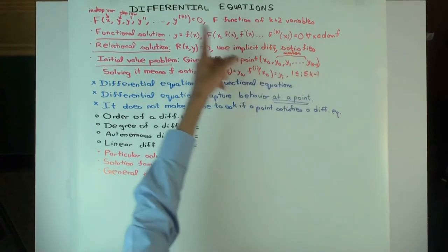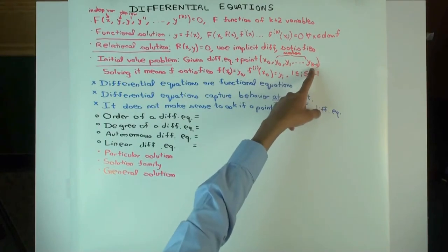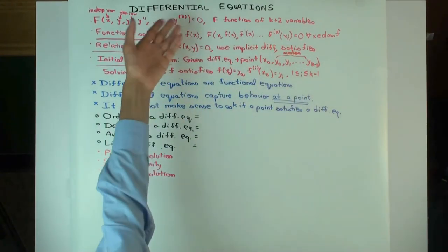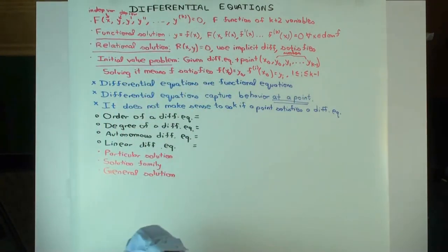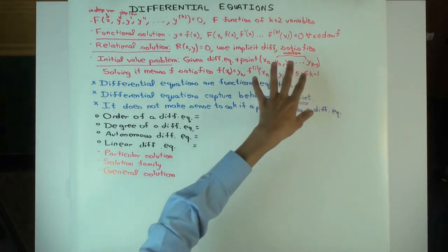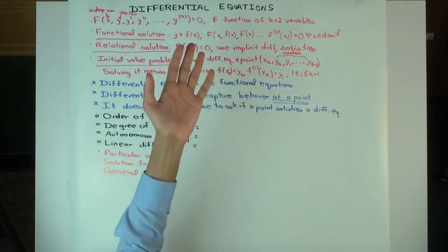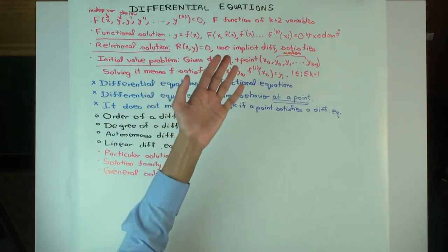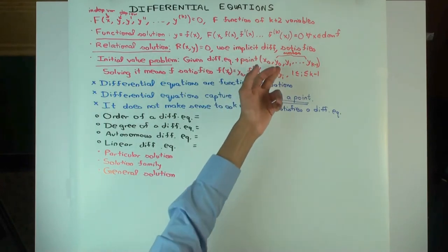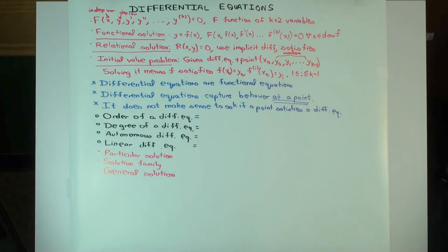The reason you specify only up to the k minus 1 derivative is that once you specify up to k minus 1, the kth derivative also gets specified because of the relation — that's the intuition. What this means is you have actual numbers and you want to find a functional solution where plugging in x₀ gives y₀ for the function value, y₁ for the first derivative, and so on.